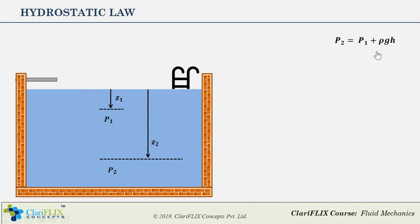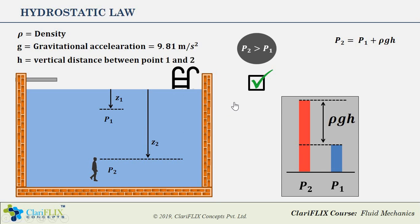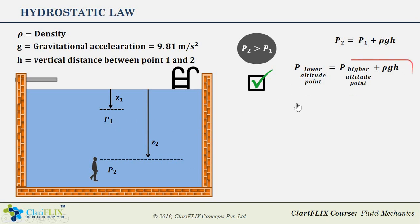Look at this equation. It clearly signifies that P2 is greater than P1 by the amount equivalent to ρgh, where ρ is the density of the fluid, g is the gravitational acceleration, and h is the vertical distance between location 1 and 2. This equation in general can be rewritten as: pressure at lower altitude point equals pressure at higher altitude point plus ρgh. This is because point P2 is at lower altitude and P1 is at relatively higher altitude. This finally is the hydrostatic law. With the help of this law, one can relate pressure at two different points that are vertically apart in a static fluid having constant density.